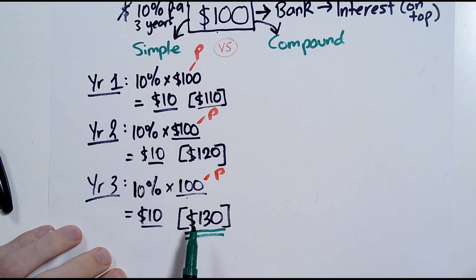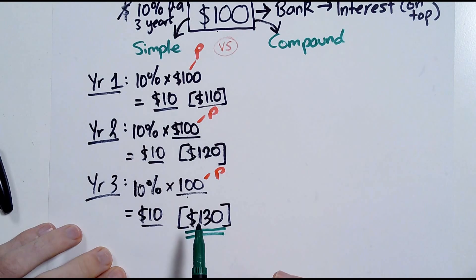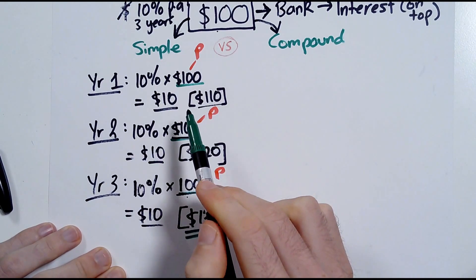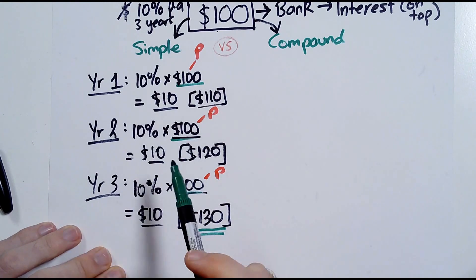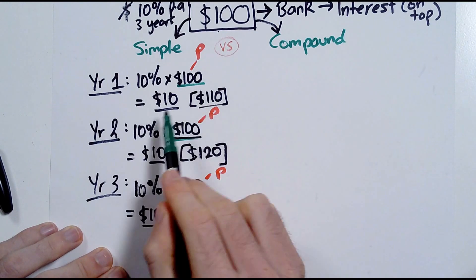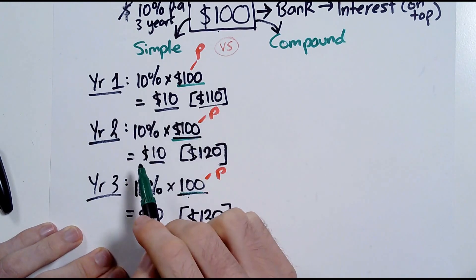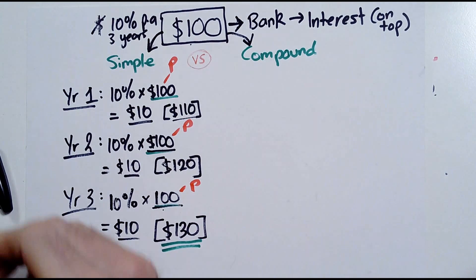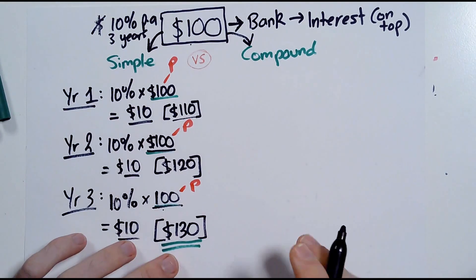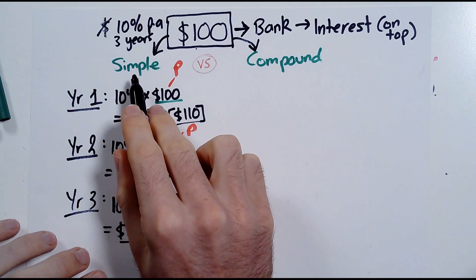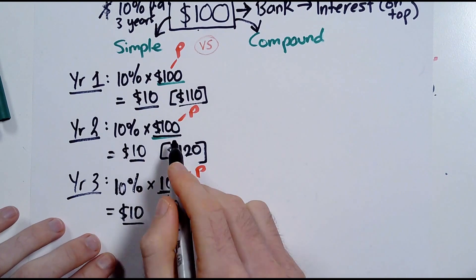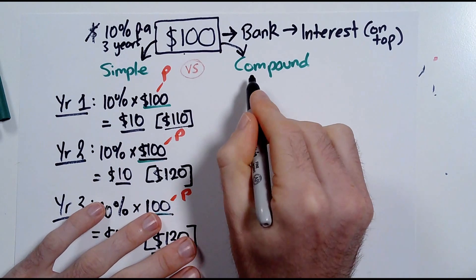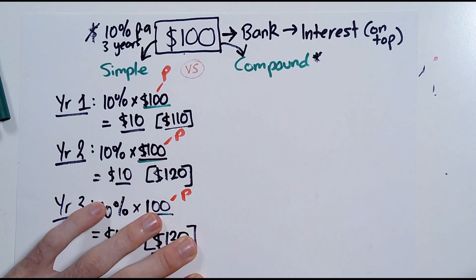Again I earn $10 in interest, which means the end total I receive is $130. When I go back to the bank in three years time, they hand me $130. The crucial distinction is they've only been paying me 10% of the same $100 I put in at the start, never adjusting that amount even though technically my savings were growing. Compound interest is a much better option from the perspective of the person who saved the money. It's the more popular form of interest.